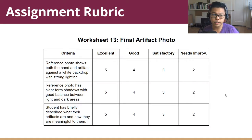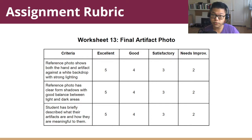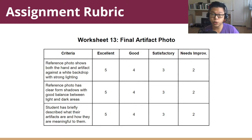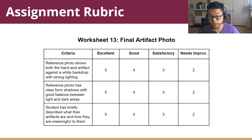This is the rubric for the assignment and how I'm grading you. There are three things I'm looking for. First, does your photo show both your hand and the artifact against a white backdrop with strong lighting? The way you can tell there's strong lighting is if there are very dark shadows — it's much easier to draw with strong shadows. Second, does your photo show clear form shadows and a good balance between light and dark areas? You want highlights and shadows to be balanced. Third, have you written briefly to describe what your artifact is and how it's meaningful to you? Those are the three criteria.